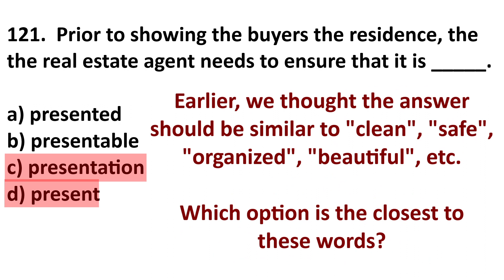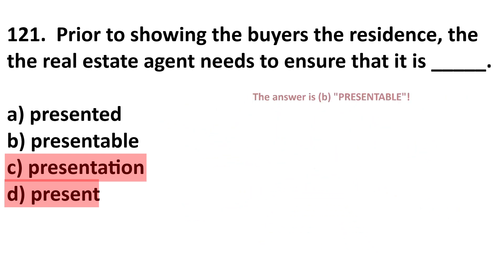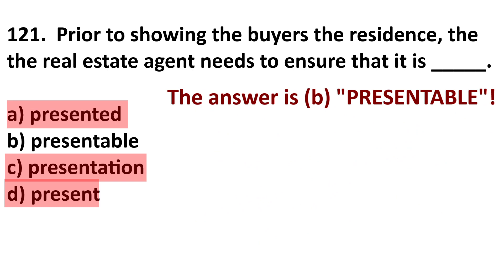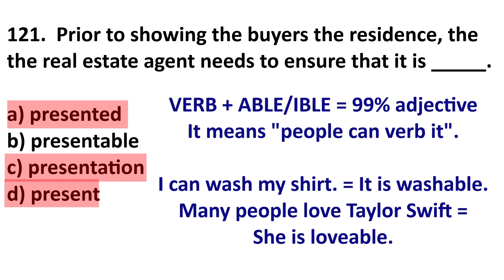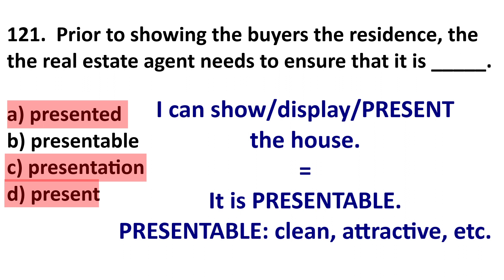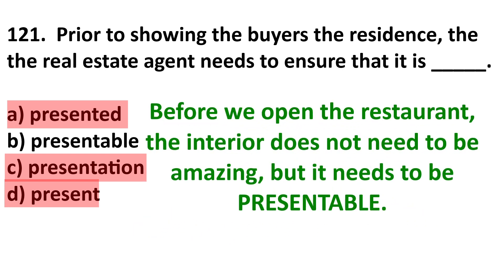We said safe, clean, beautiful would be logical. The closest word is 'presentable.' Remember, verb plus -able becomes an adjective meaning people can do that action to it — a shirt is washable, Taylor Swift is lovable. You can display or present the house, so it is presentable. Presentable means looking clean and attractive. For example, 'before we open the restaurant, the interior needs to be at least presentable.'